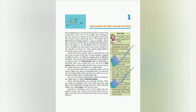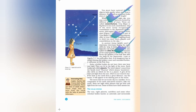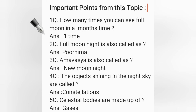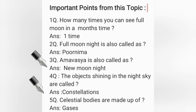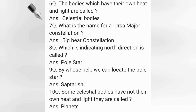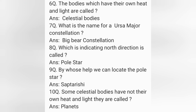Here are some important questions from this topic for the UPSC examination. We can see the full moon only once in a month's time. Full moon night is also called Purnima, and new moon night is called Amavasya. The bodies which have their own heat and light are called celestial bodies. Another name for the Ursa Major constellation is Big Bear constellation. The star which indicates north direction is called the Pole Star. With the help of Sapta Rishi, we can locate the Pole Star. Sapta means seven and Rishi means sages — seven sages is called Sapta Rishi. Some celestial bodies that do not have their own heat and light are called planets.